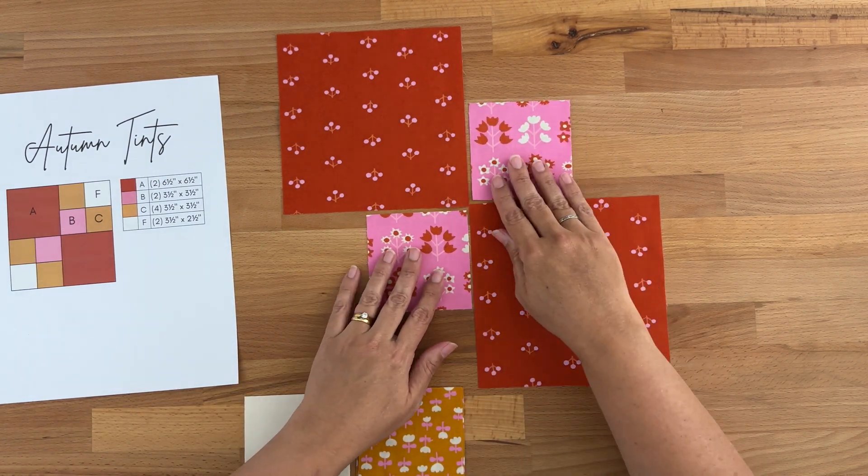So there we have the Autumn Tints Quilt Block. I hope you enjoyed that and if you did please hit the like button, it really helps me out. Now if you're not getting that perfect 12 and a half inch squared block that you need, just work on your scant quarter inch seam allowance, and that's when your quarter inch seam allowance is just a few threads in from that quarter inch seam. If you like this video you might like to check out last month's mystery block where we did the log cabin block. Thanks so much for joining me and I'll see you in the next video.